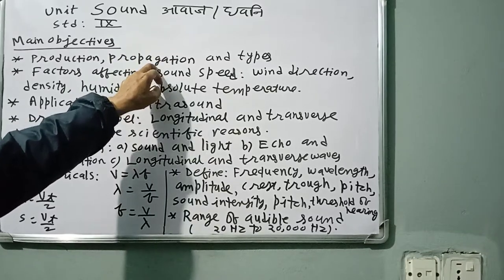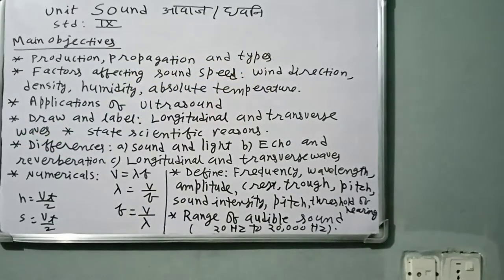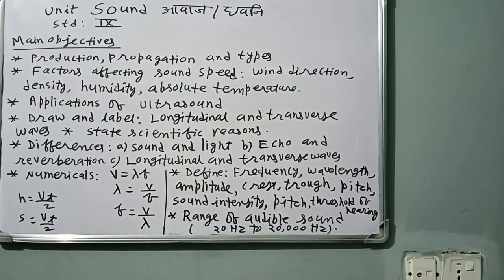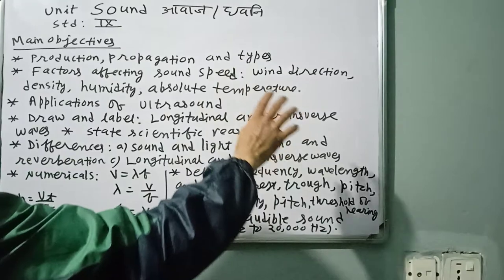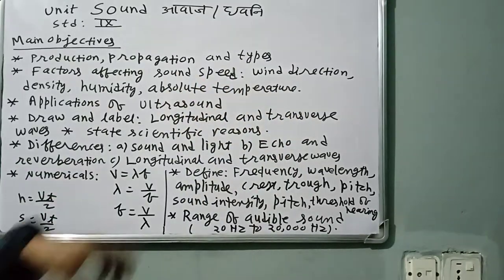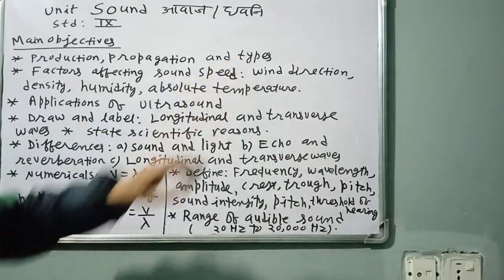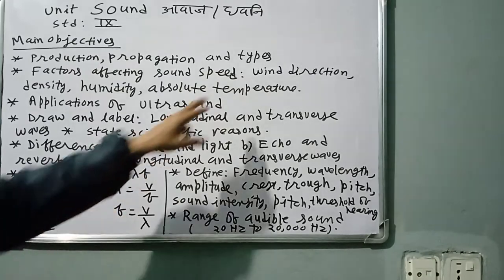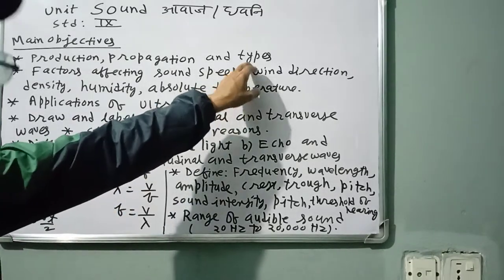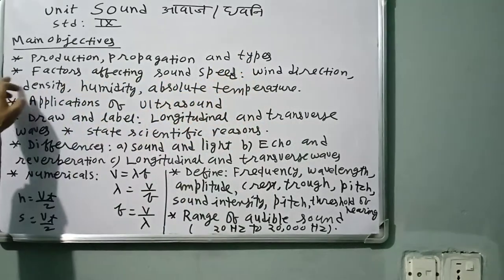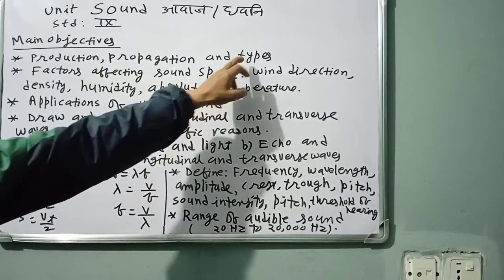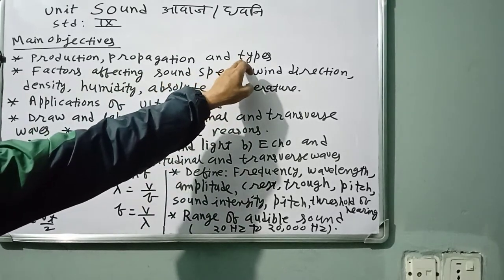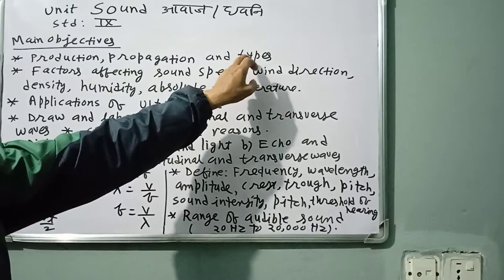There are two types of sound on the basis of pleasure: music and noise. On the basis of frequency, there are three types of sound: ultrasound, infrasound, and audible sound.